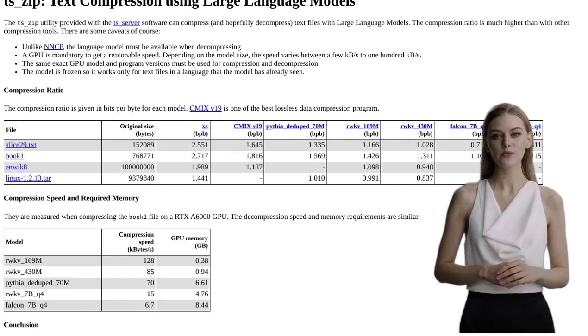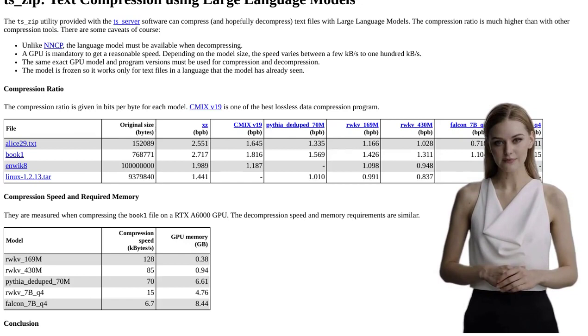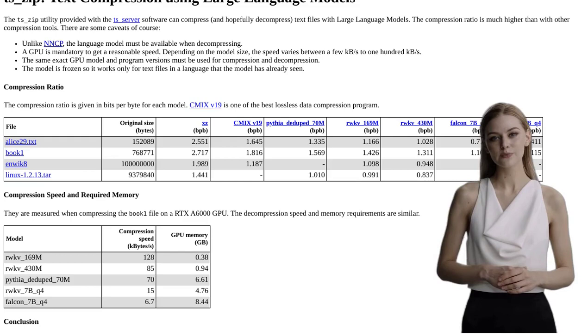First, ts-zip requires the language model for decompression. So if you want to unzip your files, you'll need to have that model handy. It's a small trade-off for the incredible compression ratios you'll be getting.